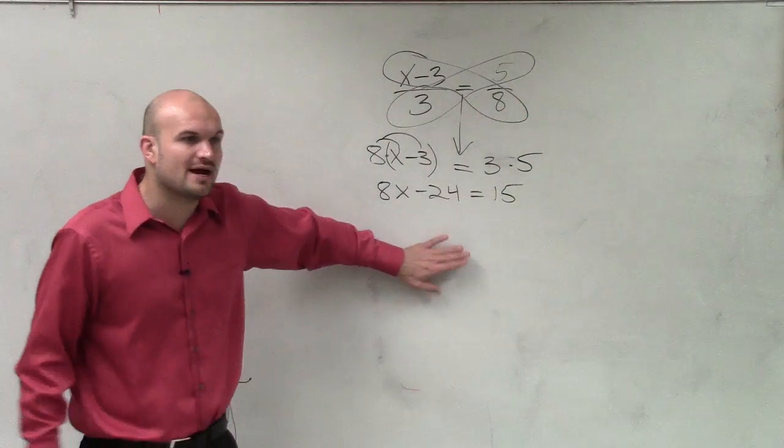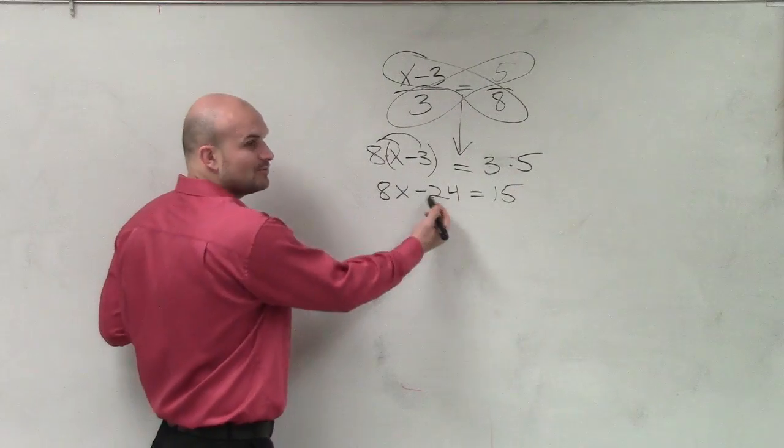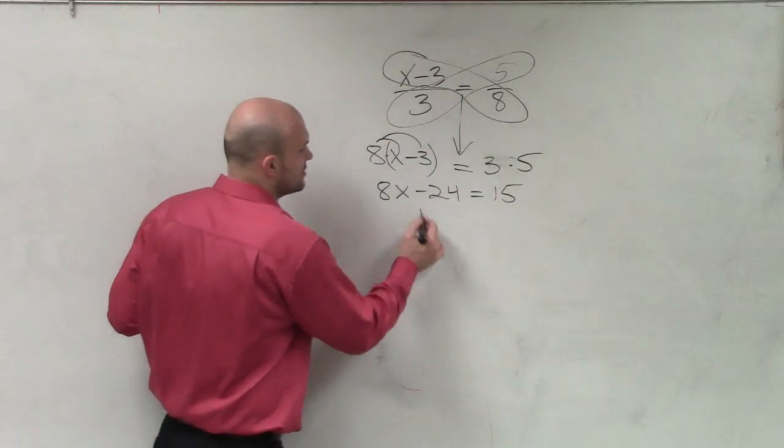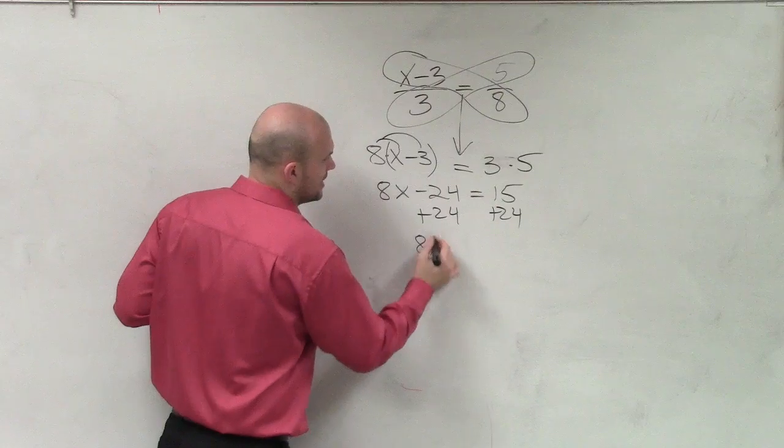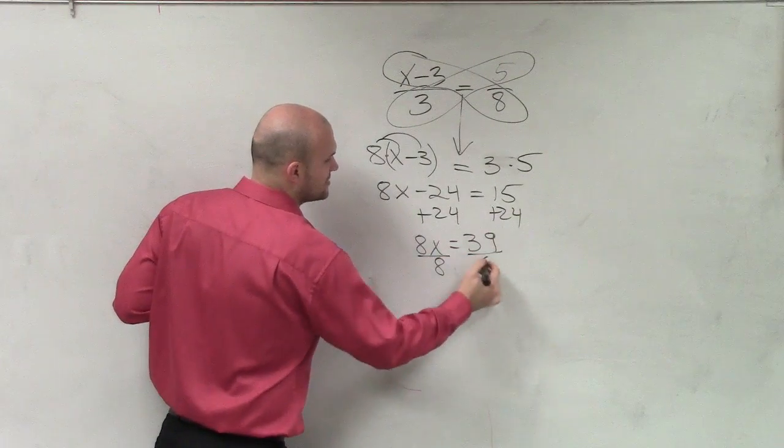Now I need to solve for x. So this goes back to algebra 1 applying two-step equations. Look at what's happening to your variable—it's being multiplied and it's being subtracted. We always undo addition and subtraction first. So I add 24, 8x equals 39 divided by 8, divided by 8.